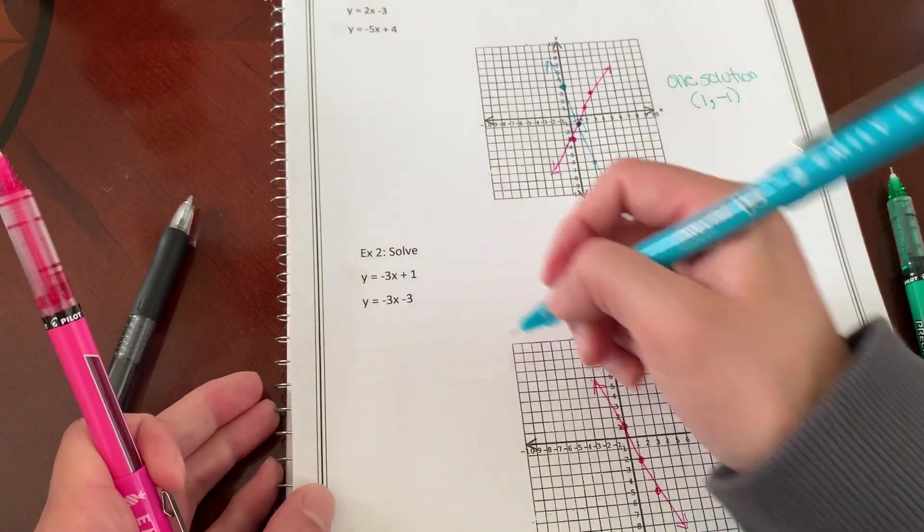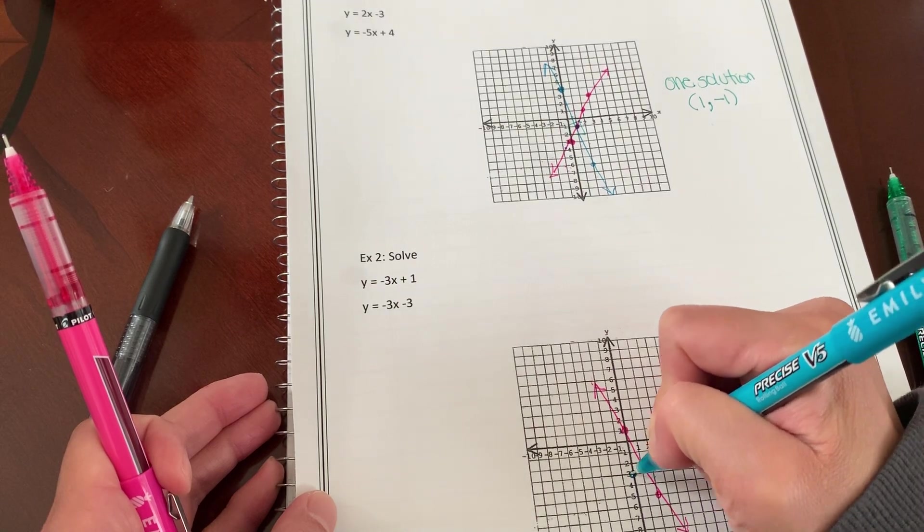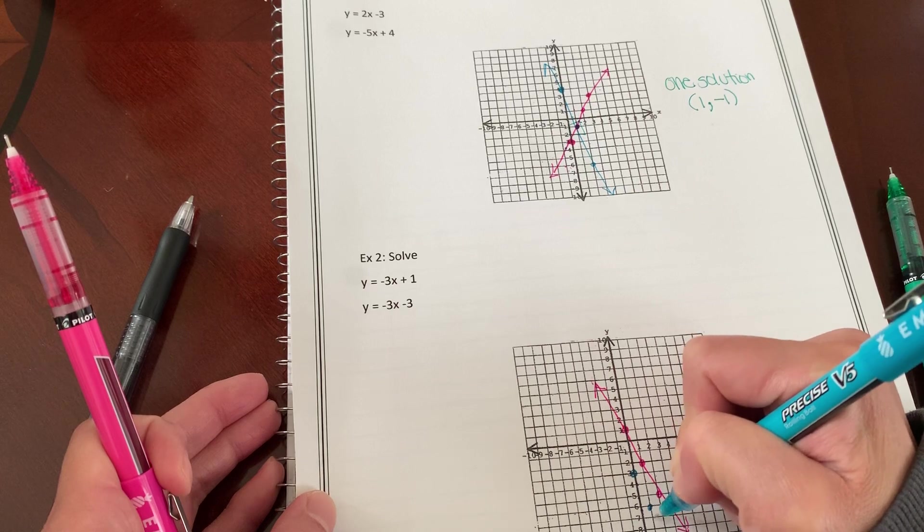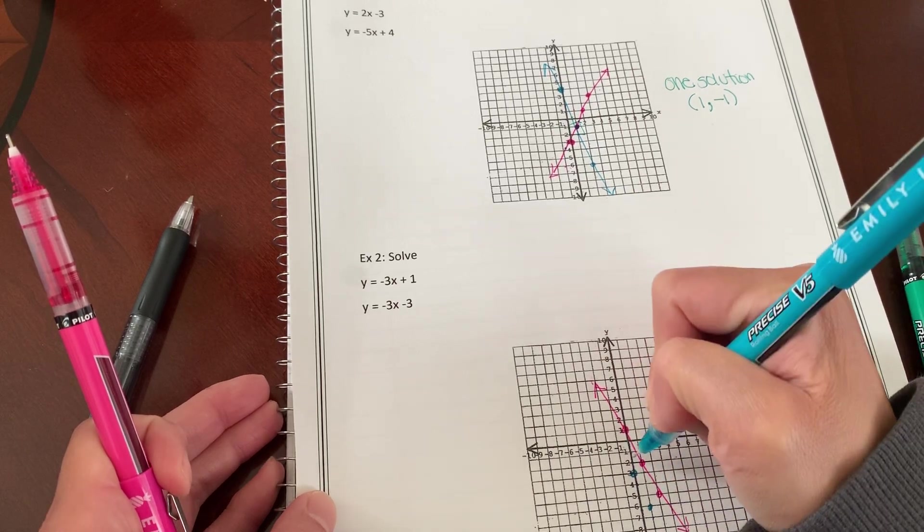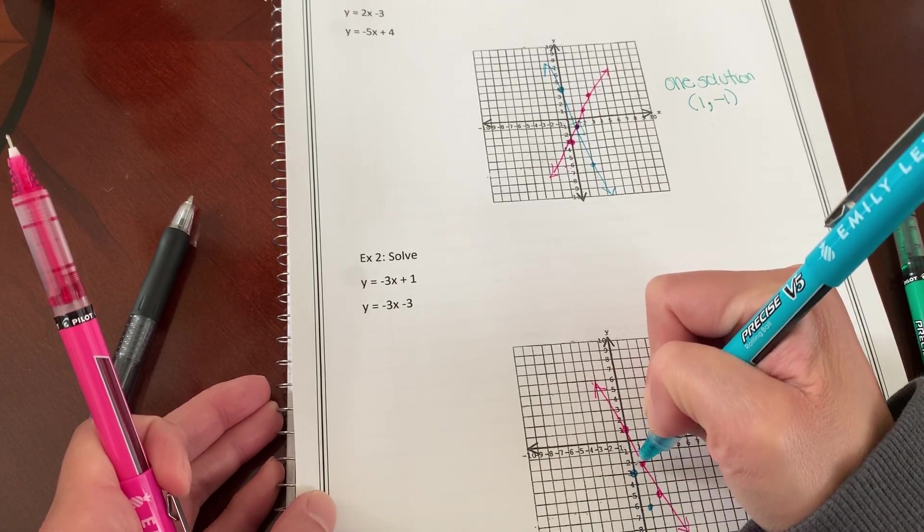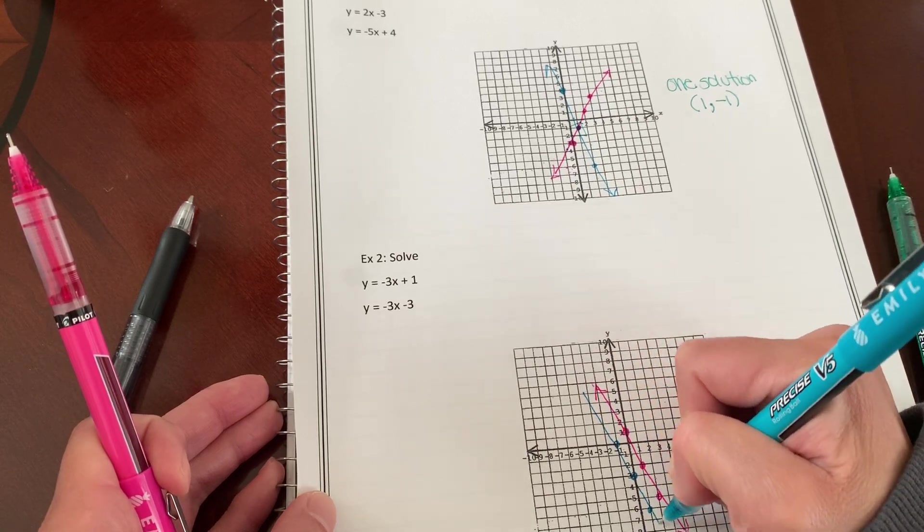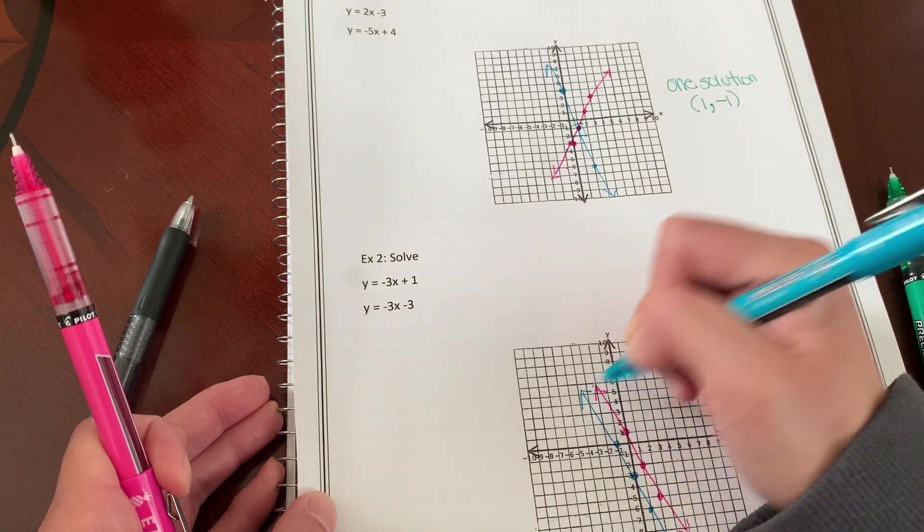Equation two, I have negative three, one, two, three, and I'm going to do the same. Down three, one, two, three, right one. I'm just going to go up three, one, two, three, right one, just to make sure my line is pretty clear.